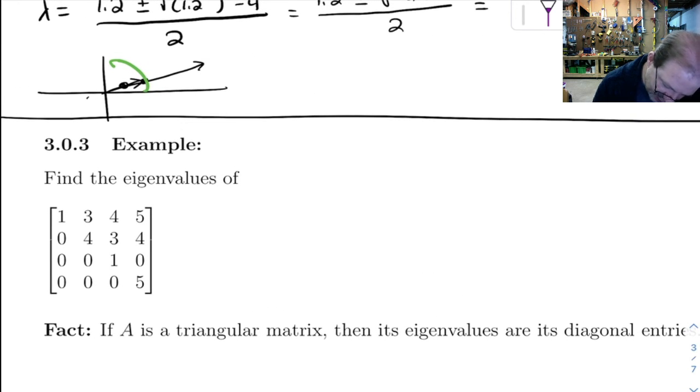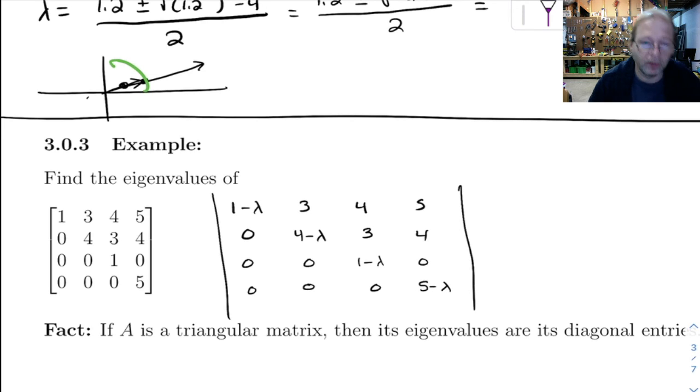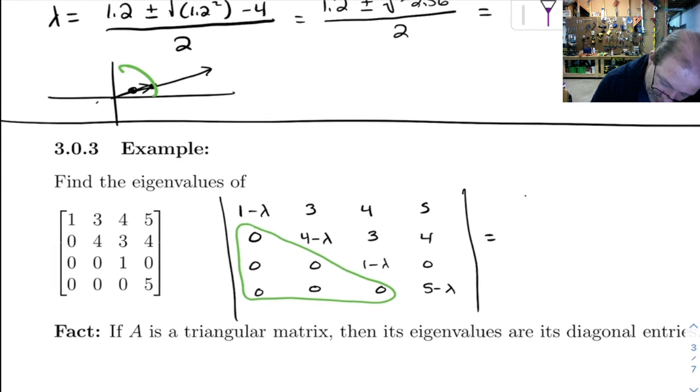But this matrix, if we start subtracting the lambda off of the diagonal, you get 1 minus lambda, 3, 4, 5, 0, 4 minus lambda, 3, 4, 0, 0, 1 minus lambda, and 0, 0, 0, 5 minus lambda. So we've got to take the determinant of this, but we're in luck, because this is a triangular matrix. Remember, if you have a triangular matrix, the determinant is just the product of the diagonal entries.